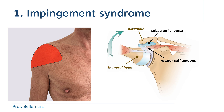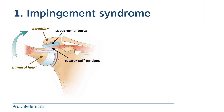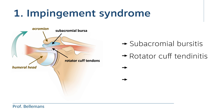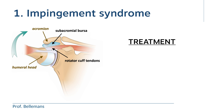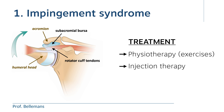As a consequence, inflammation or damage to these structures occurs, leading to, in progressive order: subacromial bursitis, rotator cuff tendinitis, rotator cuff partial tear, or rotator cuff full tear. The treatment consists of physiotherapy with exercises that aim to restore the muscle balance around the shoulder so that the squeezing or entrapment effect disappears. Sometimes injection therapy can be of further help, and surgery may be indicated when there is a tear in the rotator cuff tendons.